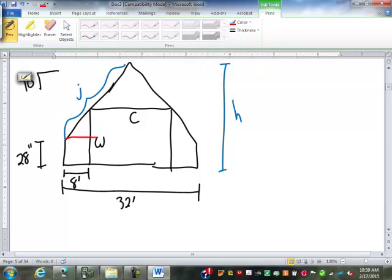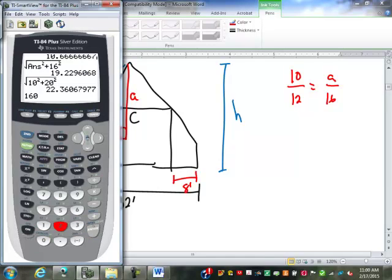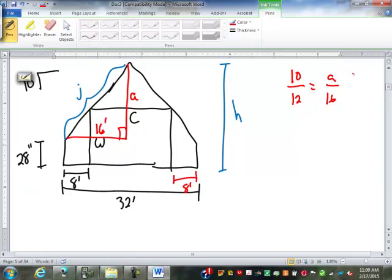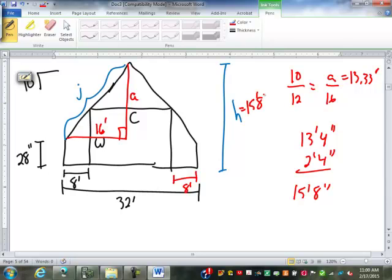So we can find H. I'm going to do this. Draw this in like this. It would be 8 feet over here too. You're going to have to assume it's symmetrical. This is 16 feet here. I'm going to call this piece A again. 10 over 12 equals A over 16. So 160 divided by 12, 13.33. So that's 13 feet 4 inches plus 28 inches. Well, that's 2 feet 4 inches, right? 13 feet 4 inches plus 2 feet 4 inches. That's 8 inches and 15 feet. So H is 15 feet 8 inches.